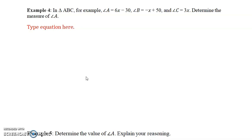It says in triangle ABC, for example, angle A is 6x minus 30, angle B is negative x plus 50, and angle C is 3x. Determine the measure of angle A.